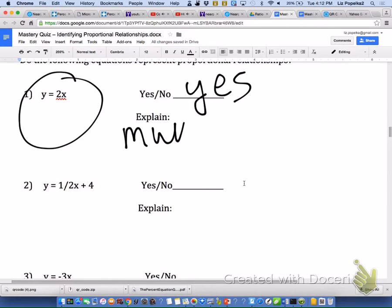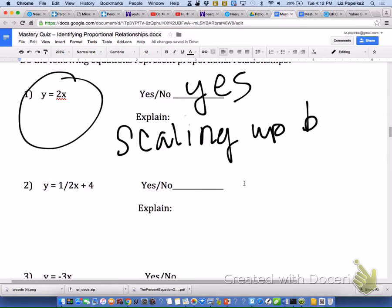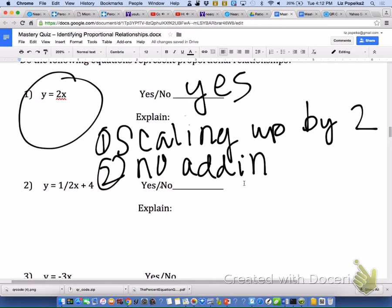My explanation is that I could say scaling up by 2, or I could say there's no adding or subtracting. Either one of those will be okay with me, as long as I can tell that you know it doesn't need to have adding or subtracting in it.